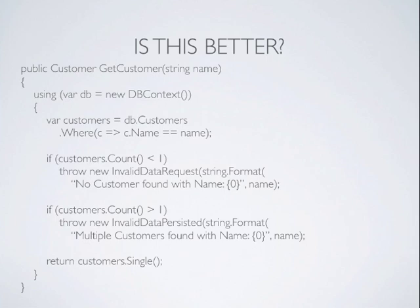We've actually created two custom exceptions: InvalidDataRequest and InvalidDataPersisted, because those are two different things that may have gone wrong. Our logging mechanism can discern between these and report on them in a more meaningful context. For example, if a user interface is calling this and no customer was found, that InvalidDataRequest is really not a big deal — they just searched for a customer we don't have. But InvalidDataPersisted is a big deal, because we want customers to be unique. Or if an automated backend process is using this, an InvalidDataRequest is a bigger issue — it means that process is getting information from somewhere that isn't valid.